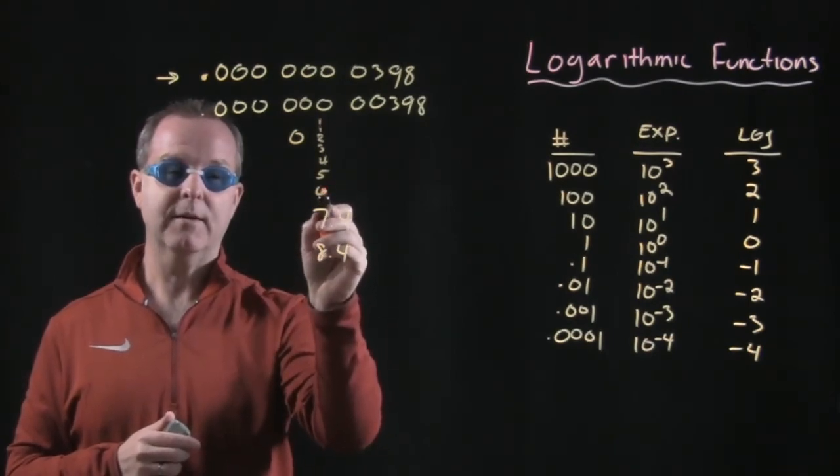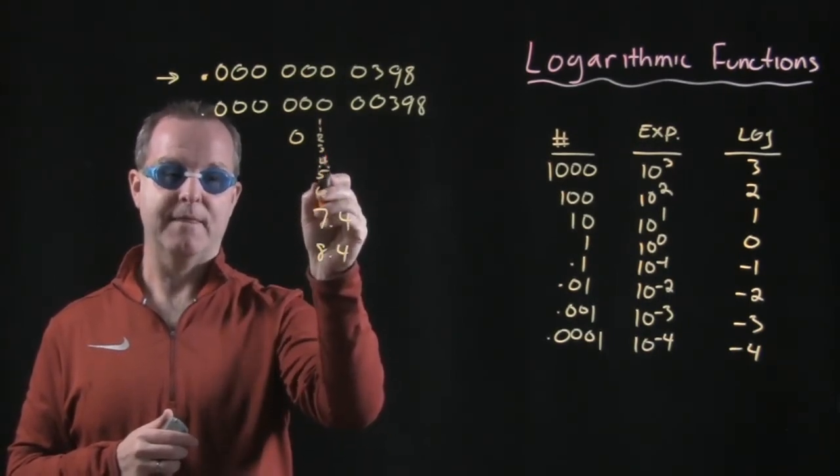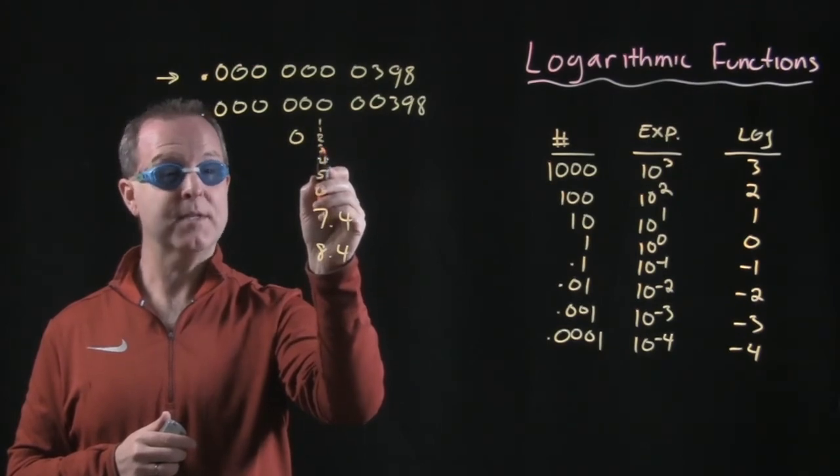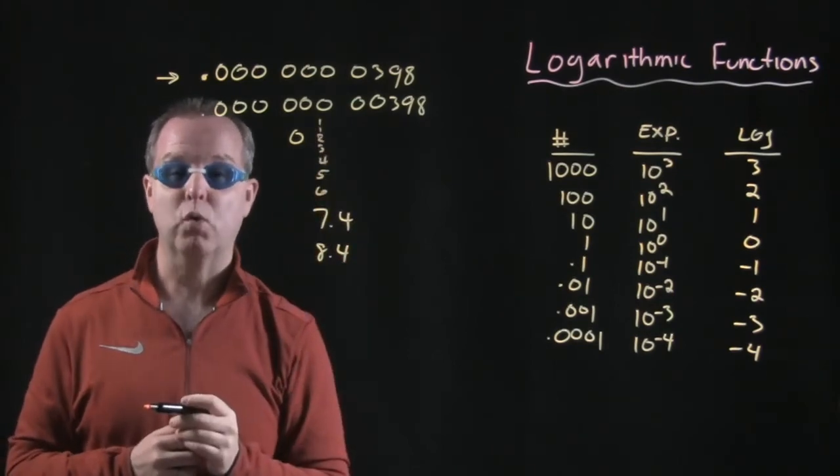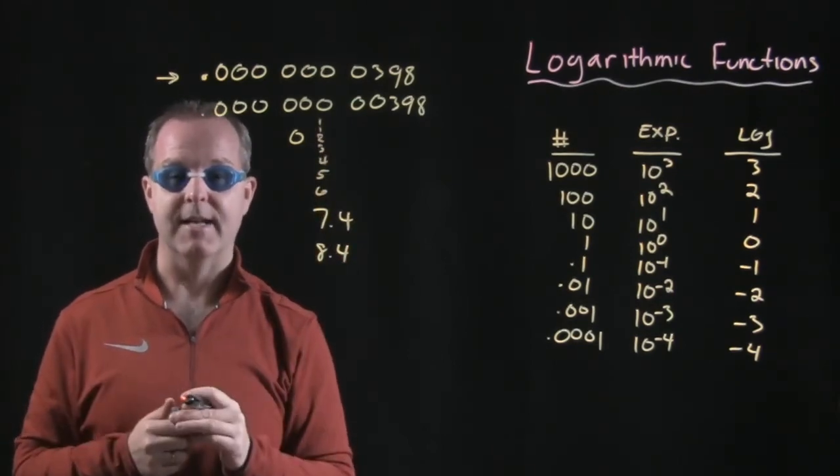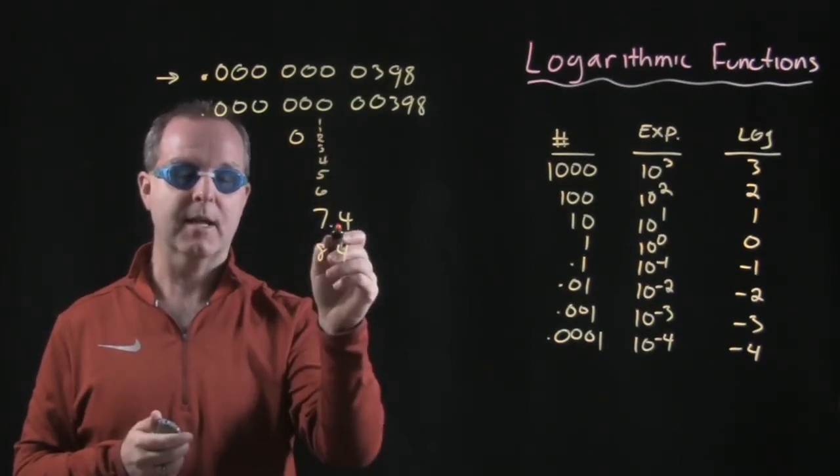this would be 10 times greater, 100 times greater, 1,000 times greater, 10,000, 100,000, 1,000,000. 10,000,000 times greater, the acid content of battery acid as compared to our eyes.